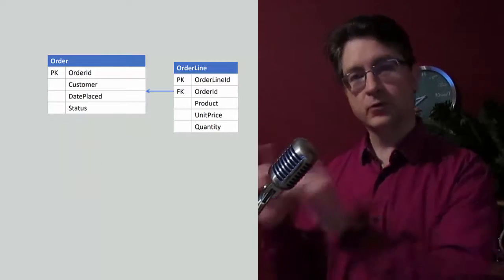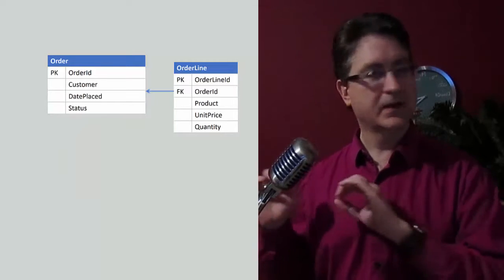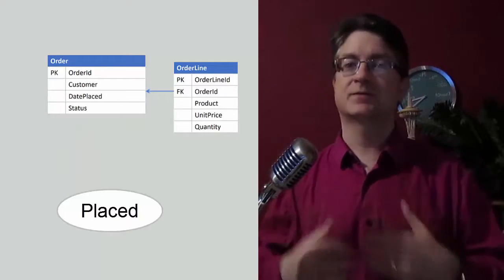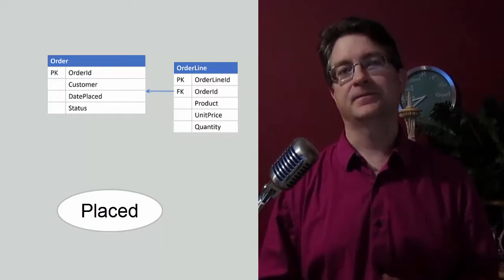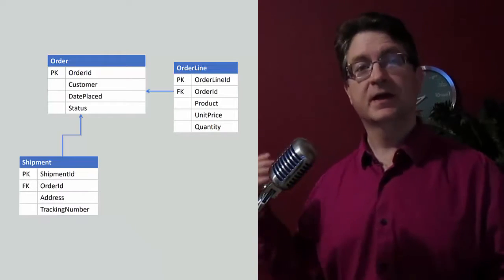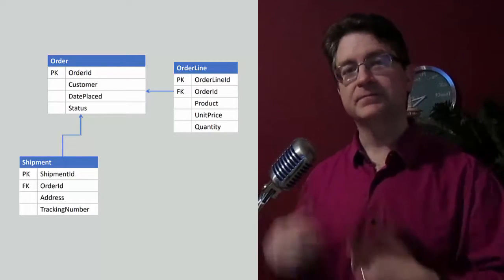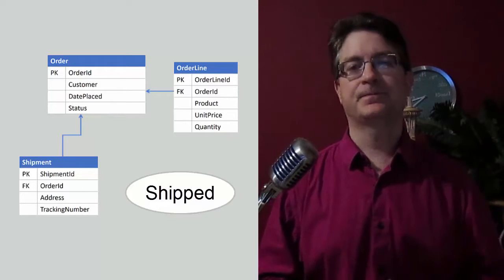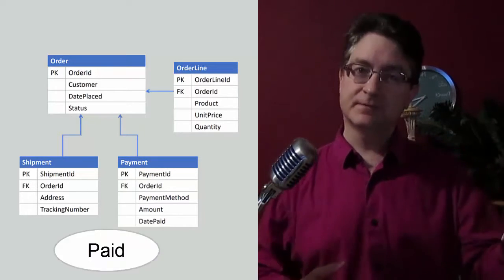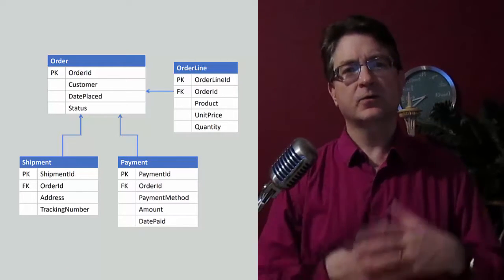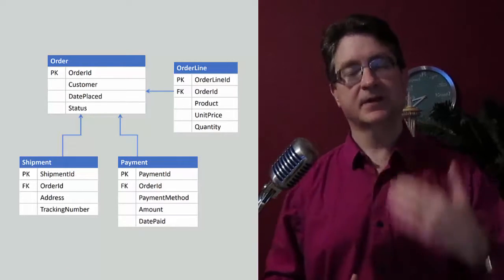So if I have an order record, but no payments and no shipments, then I know that the order has been placed. It's in the placed state. If I see that the order has a shipment record, but no payment, then I know that it's been shipped. And if the order has a shipment and a payment, I know it's been paid. So I can use the existence of these child records to figure out the status of the order.